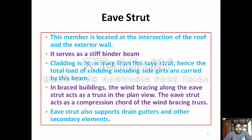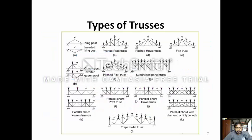Eave strut. This is a member located at the intersection of the roof and the exterior wall. It serves as a stiff binder for the beam. The cladding is often hung from the eave strut, hence the total load of the cladding including its self-weight is carried by this beam. In a braced building, the wind bracing along the eave strut acts as a truss in plan view, and the eave strut acts as a compression cord in the wind bracing system. The eave strut also supports the drain girders and other secondary elements.